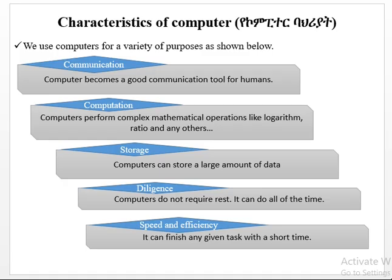It can give you more speed and efficiency. It can finish any given task and will take a short period of time. If you have a complex problem, you will have to solve all the problems. A computer device can be categorized into hardware devices and software devices.